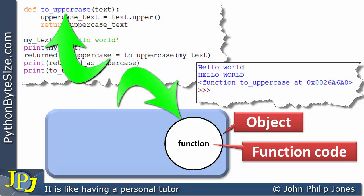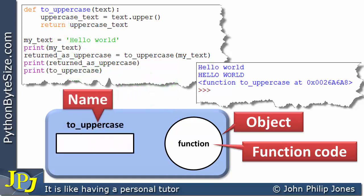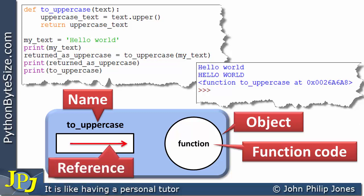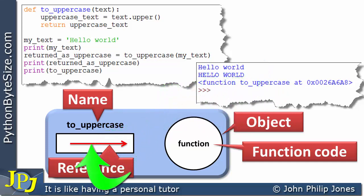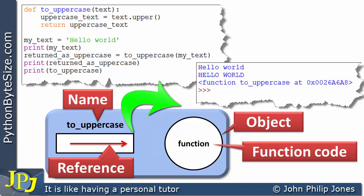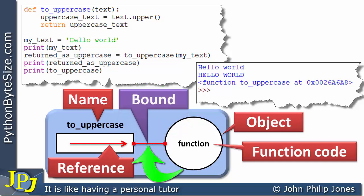Here you can see the name, and immediately below it a rectangular area. Into this is going to be placed the object reference to the function — represented here by this arrow. In reality, what it's going to be is this address, because `to_uppercase` will hold the address of where this function is in the computer's memory. We say there's a binding between the name and the function. In Python, the object and the name are separate, and this separation is achieved in CPython using a dictionary.